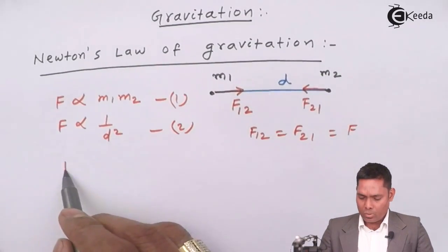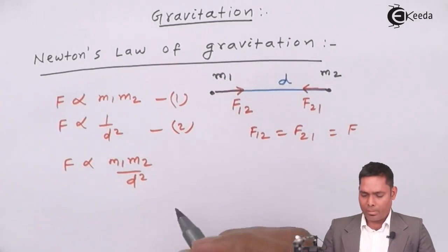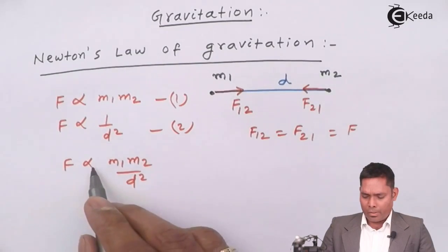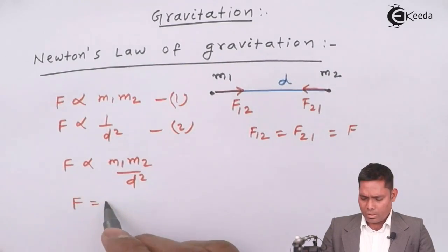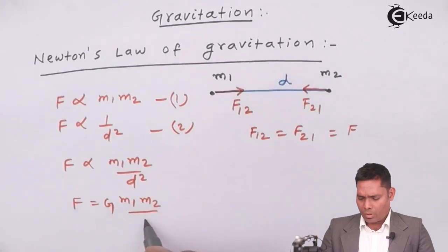If I combine these two, then I have a product of their masses and square of the distance between them. If I introduce a constant, then this constant is known as G M1 M2 over D square.